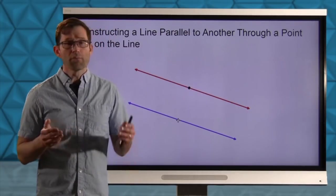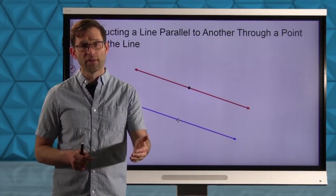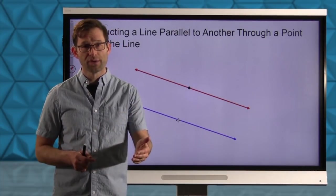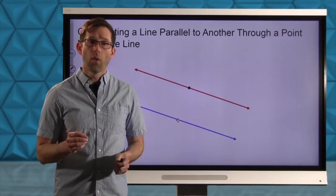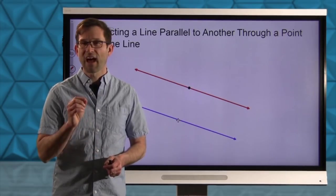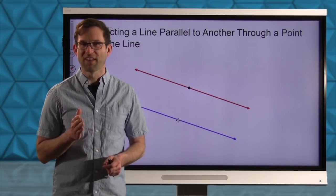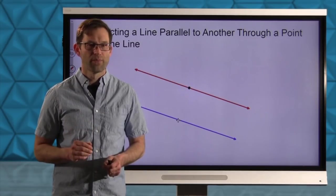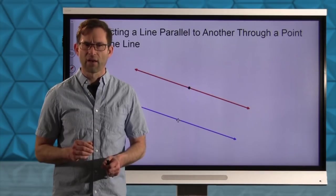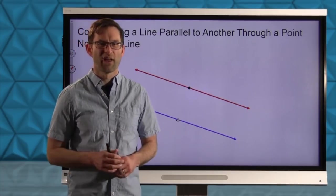Now let's talk about parallel lines — constructing a line parallel to another through a point not on the line. The key is understanding how to prove that two lines are parallel: we can do it by showing that alternate interior angles are congruent, or that corresponding angles are congruent. And it's that corresponding angle piece that's going to be the key to this construction. What we're really going to do, strangely enough, is copy an angle — and by copying an angle, we're going to get parallel lines.